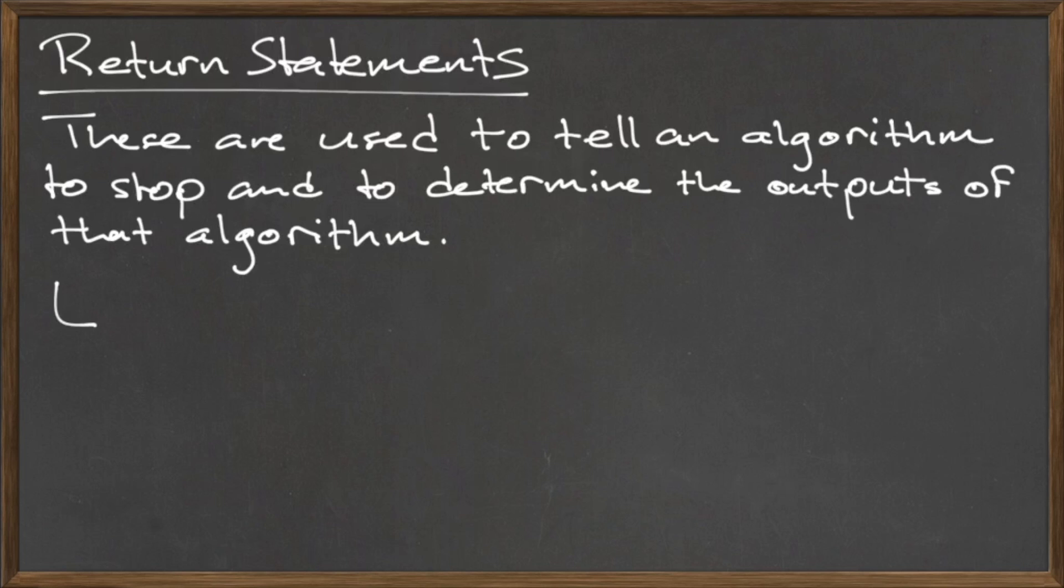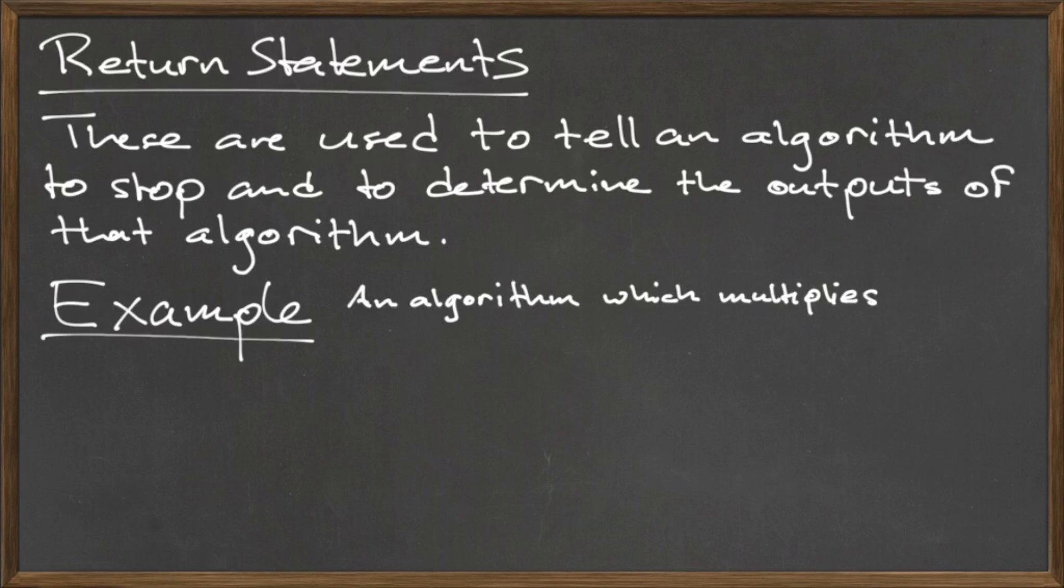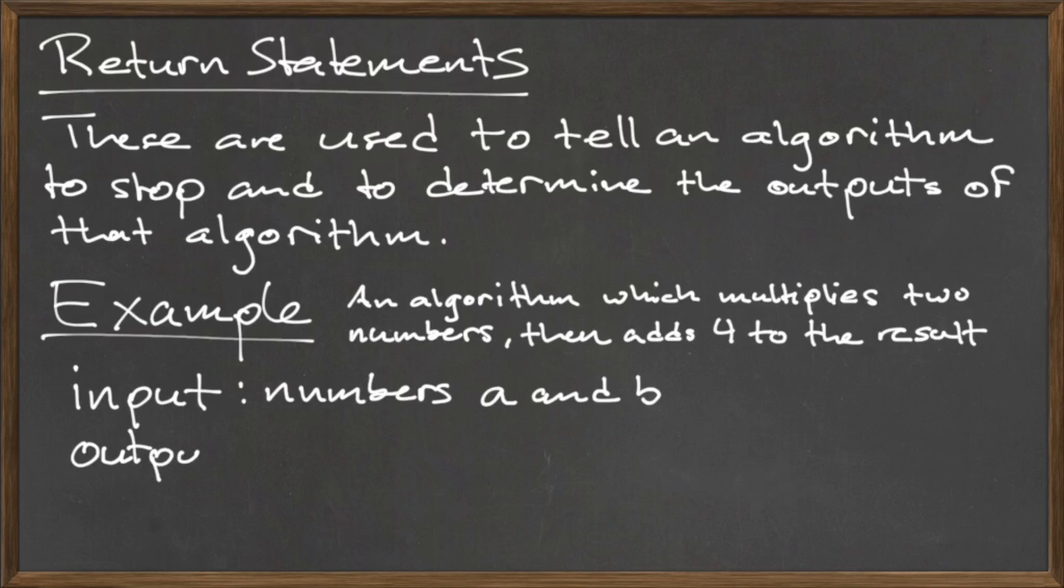For example, let's say that we wanted to take two numbers, multiply them together, and then add four to that result. We could design an algorithm with the inputs a and b, and the output a times b plus four. Our algorithm then would consist of the statement return a times b plus four.